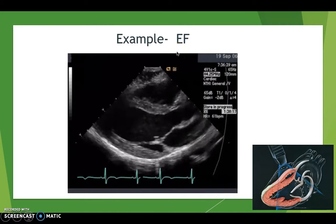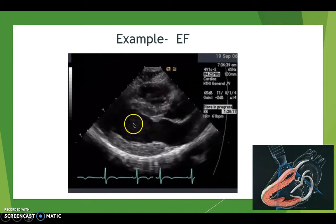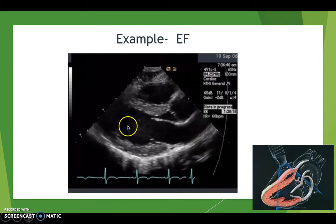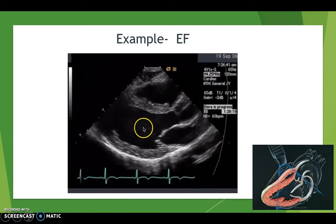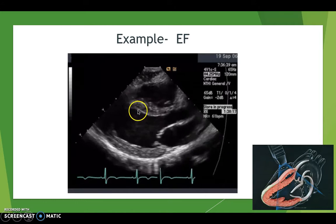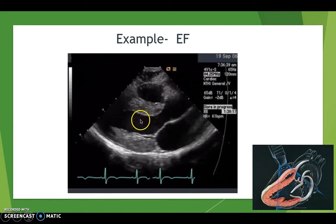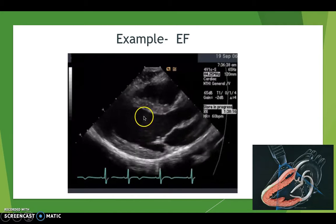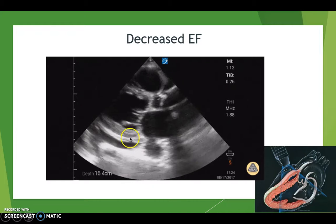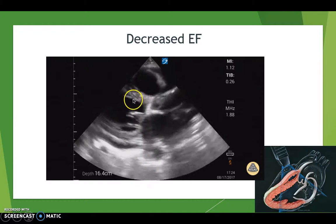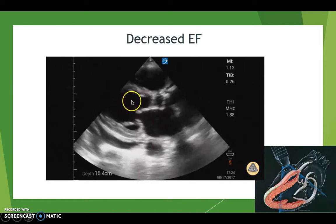One of the final things we'll talk about is ejection fraction. It takes a really long time to get a good grasp of estimating EF, but essentially you're looking at the left ventricle — how much space is there before the contraction versus after. Look at the amount of black from top to bottom before and after contraction. In this example, around half the volume goes away each contraction, so the EF is around 50–60% — a good EF. In contrast, this other example shows almost no difference before and after contraction; this EF would be generous to call 20–25%.